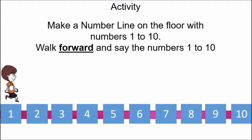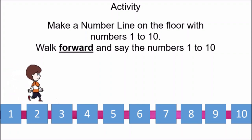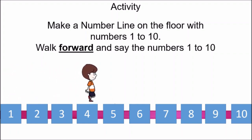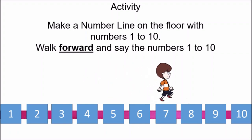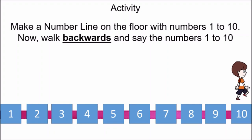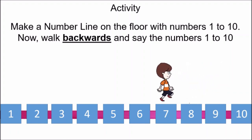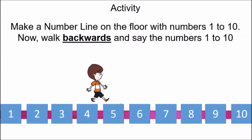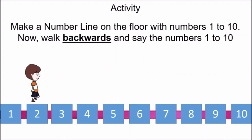Time for another activity. Make a number line on the floor with numbers 1 to 10 and walk forward and say the numbers: 1, 2, 3, 4, 5, 6, 7, 8, 9, 10. Forward means aage jana. And after walking forward, now walk backwards. Backward means piche jana. And when you walk backwards, see the numbers: 10, 9, 8, 7, 6, 5, 4, 3, 2, 1. So enjoy this activity. Bye-bye, take care children.